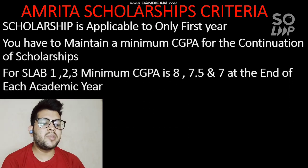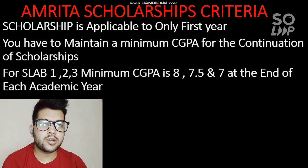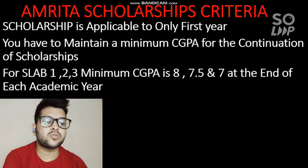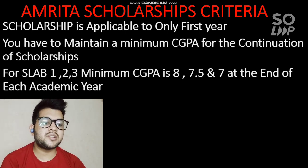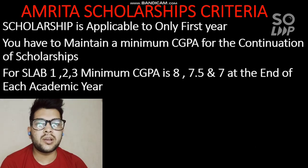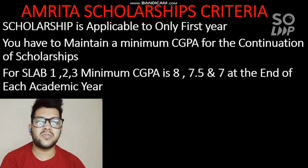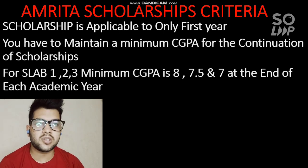For Slab 1, the minimum CGPA required is 8.0. If you got Slab 1 and want to continue for second year also, you have to score 8 CGPA — meaning your average marks across both semesters of the first year should be 8 CGPA, which is equivalent to approximately 72.5 to 73 percent. That is very easy to achieve in first year since you don't have to study too many subjects.